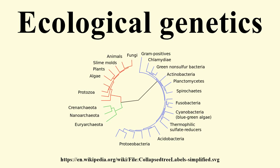Ford's magnum opus was Ecological Genetics, which ran to four editions and was widely influential. Other notable ecological geneticists include Theodosius Dobzhansky, who worked on chromosome polymorphism in fruit flies. As a young researcher in Russia, Dobzhansky had been influenced by Sergei Chetverikov, who also deserves to be remembered as a founder of genetics in the field, though his significance was not appreciated until much later.